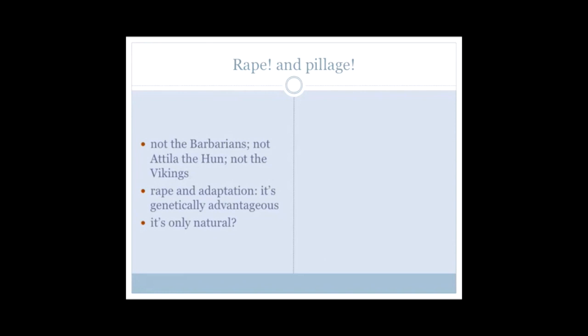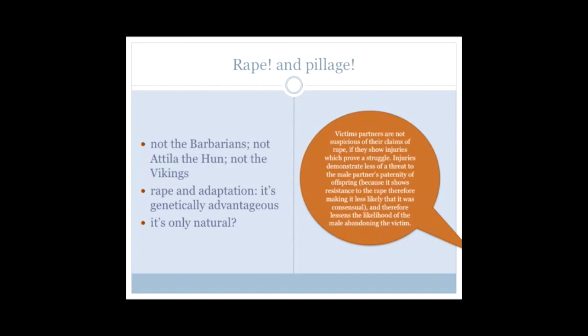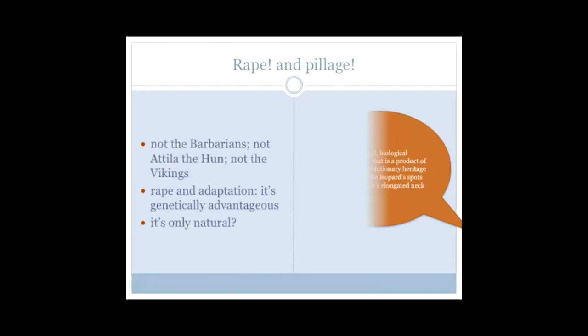Victims' partners are not suspicious of their claims of rape if they show injuries which prove a struggle. Injuries demonstrate less of a threat to the male partner's paternity of offspring, because it shows resistance to the rape, therefore making it less likely that it was consensual, and therefore lessens the likelihood of the male abandoning the victim. A natural biological phenomenon that is a product of the human evolutionary heritage, akin to the leopard's spots and the giraffe's elongated neck. That's rape, by the way. So that's us all told, that's the feminists told, get on with it, don't complain about it, because hey, it's only natural.